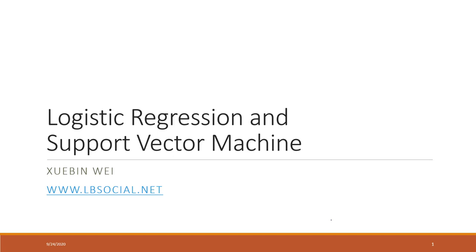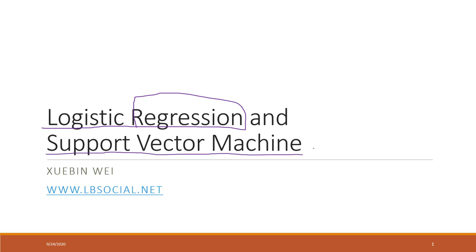Starting from this week, each week we will introduce one or two types of machine learning models — the most commonly used ones. This week we will talk about the logistic regression model. It is called a regression model, but it is actually for classification. We will also talk about the support vector machine, sometimes called SVM, which is also one of the very widely used machine learning models.